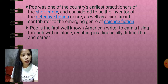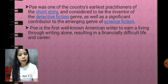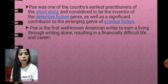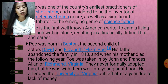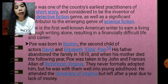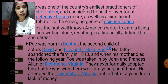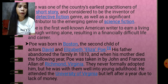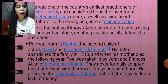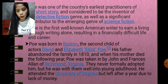Poe was the first well-known American writer to earn a living through writing alone, resulting in a financially difficult life and career. He was born in Boston and was the second child of David and Elizabeth Poe. His mother was an actress. His father abandoned the family in 1810, and when his mother died the following year, Poe was taken in by John and Frances Allan of Richmond, Virginia.